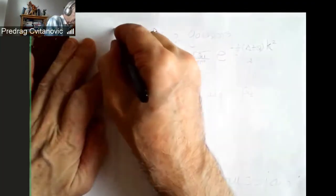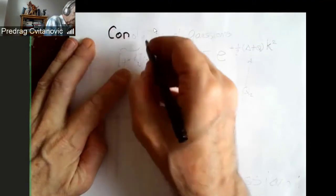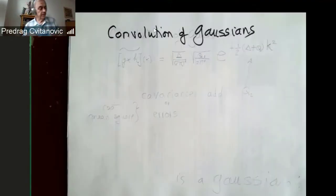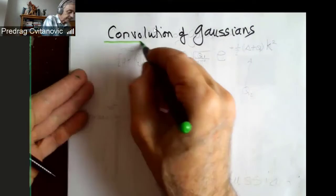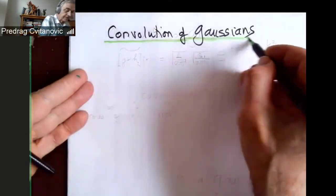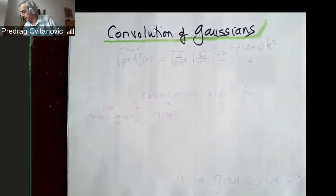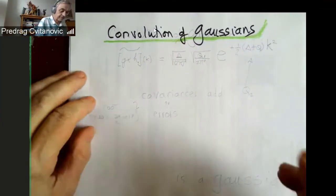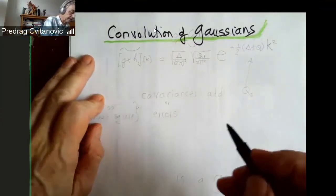And now, what's the convolution of the Gaussian? The whole business is really embarrassing because you can get tenure just integrating Gaussians. Basically, every theoretical physicist does that.